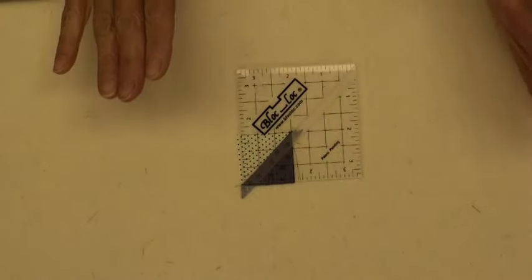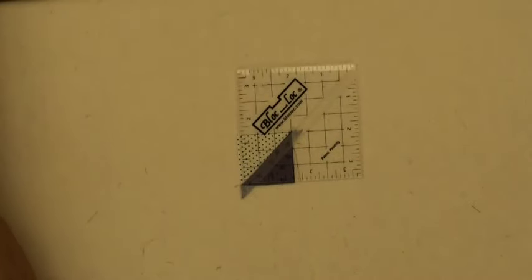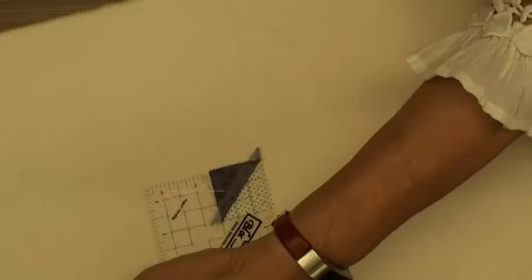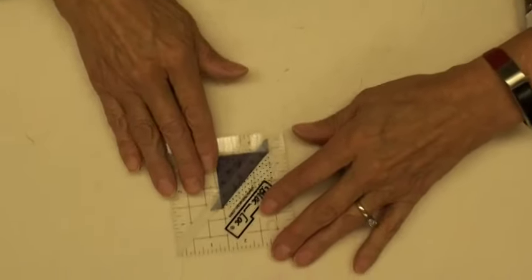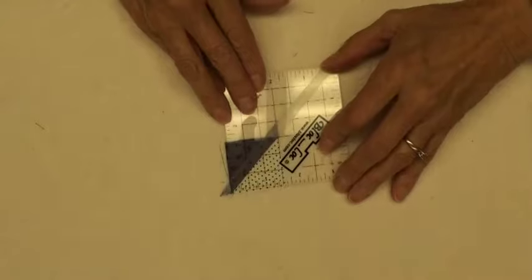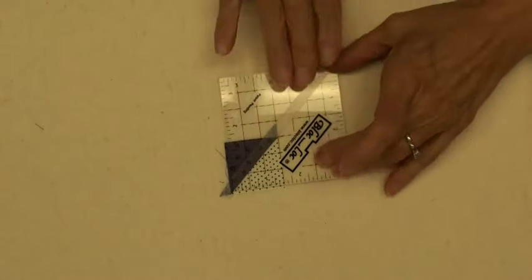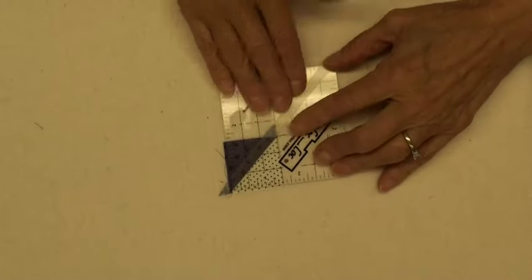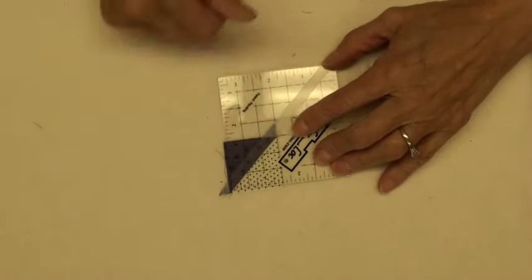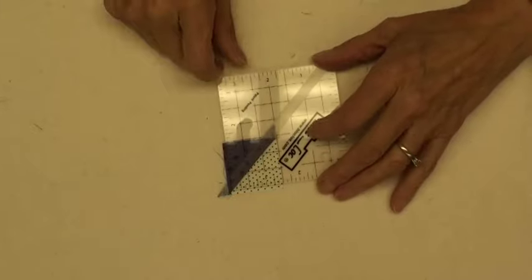Now I'm not going to move my ruler. I'm not going to move my block. I'm going to rotate my mat and I am going to slide my ruler right on down to that one and a half inch line and trim the other two sides. So you don't need to take this ruler off. It stays butted right into that seam and makes it really fun to trim.